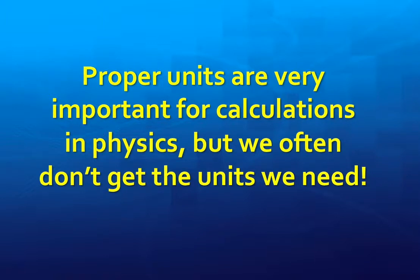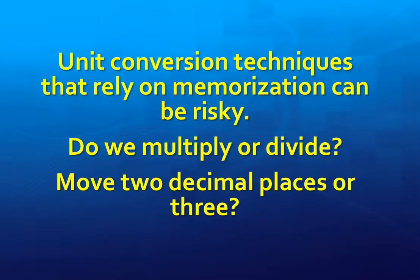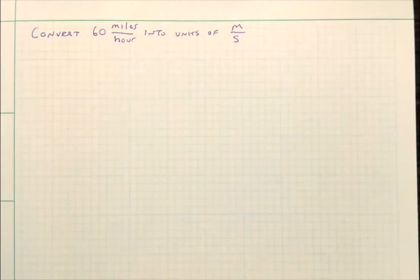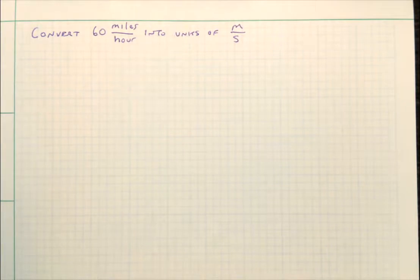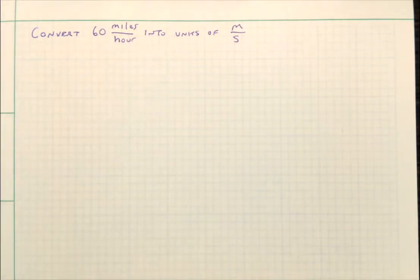In physics, it's very important that the numbers we use be in the proper units. However, sometimes the units that we have are not exactly the units that we need. In this video, I will show you how you can convert units quickly and efficiently. In this exercise, we're going to convert a velocity of 60 miles per hour into the metric unit of meters per second.